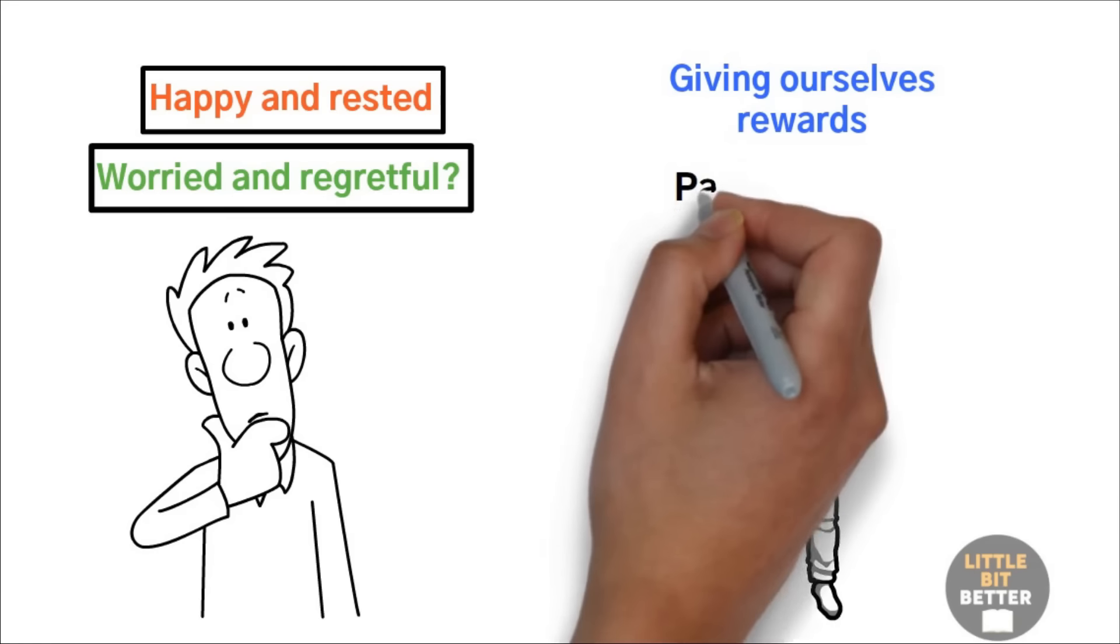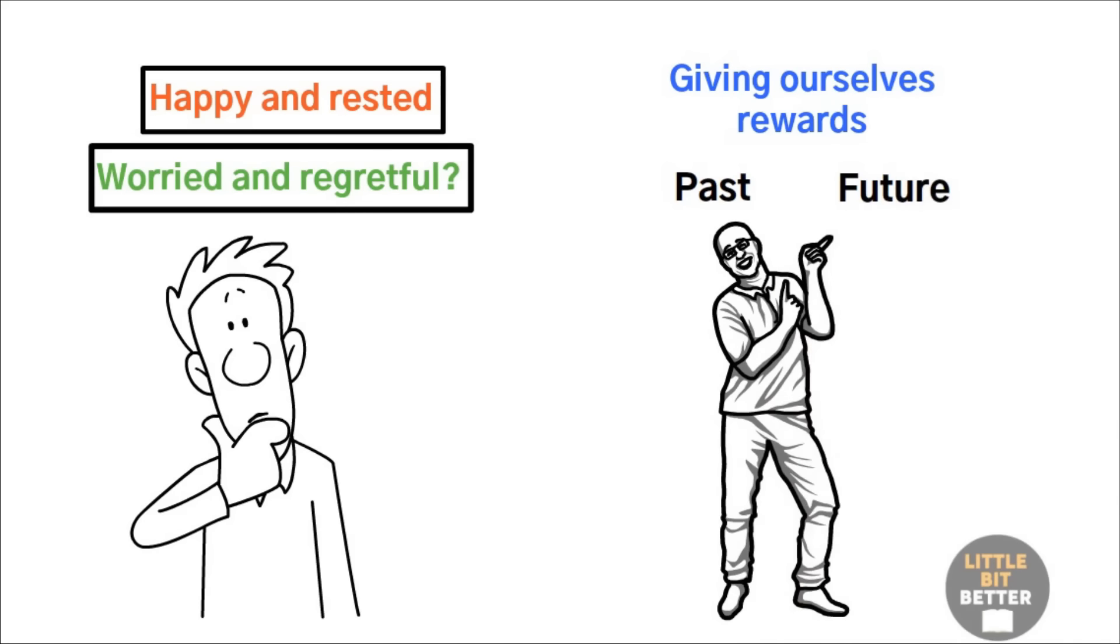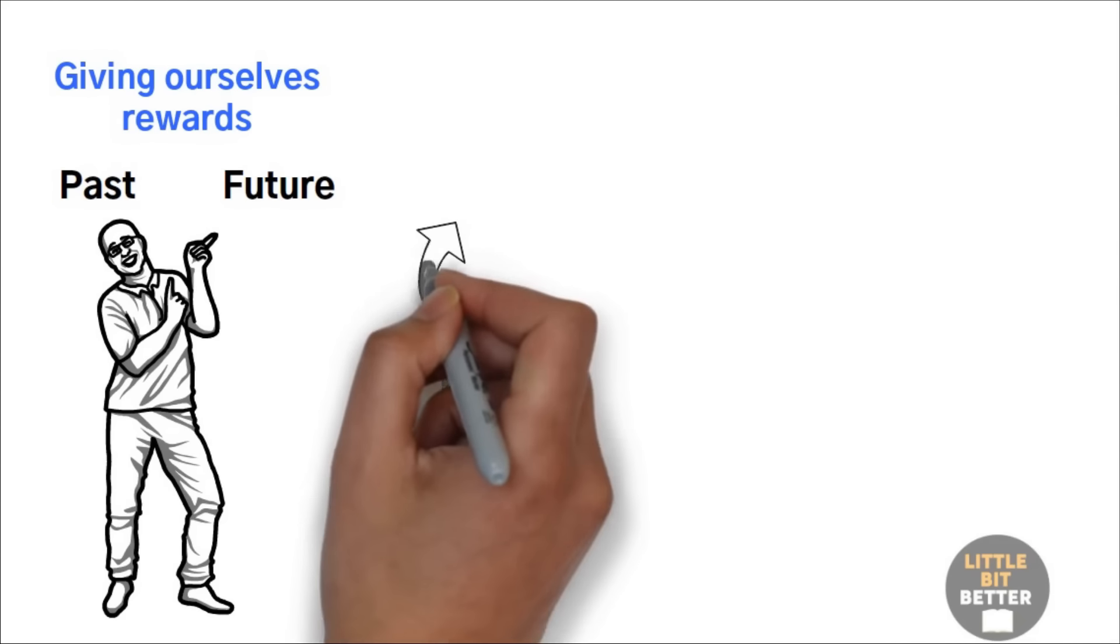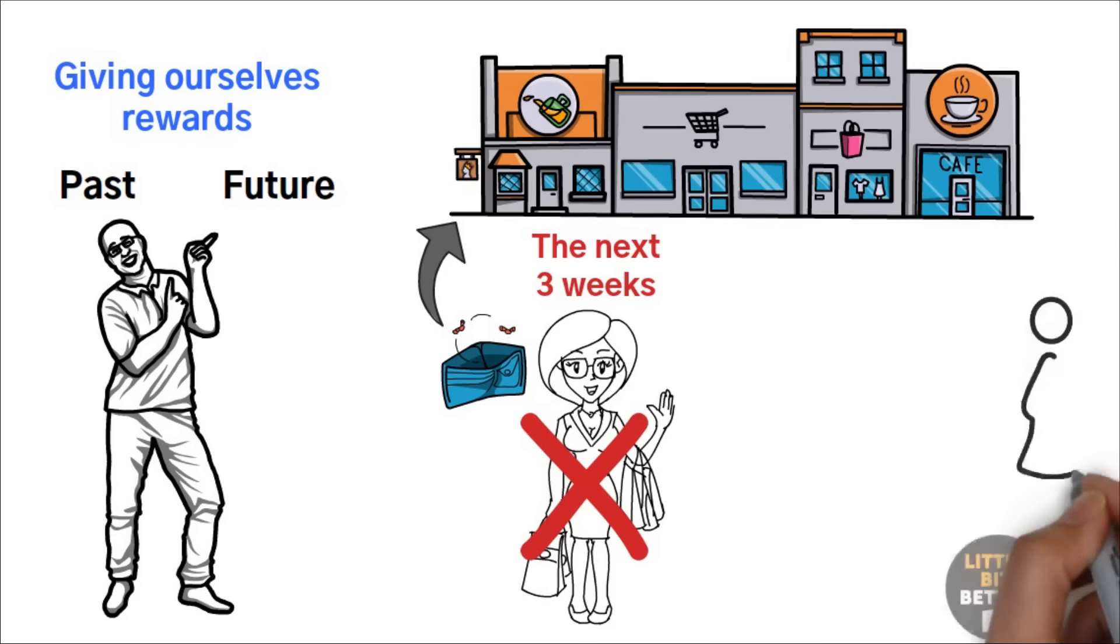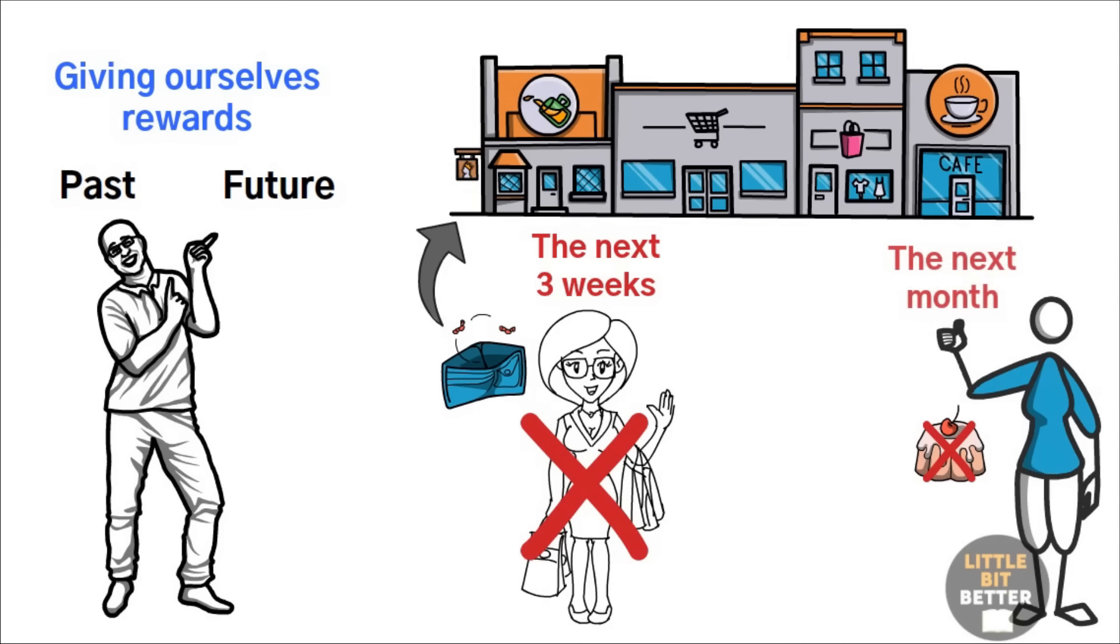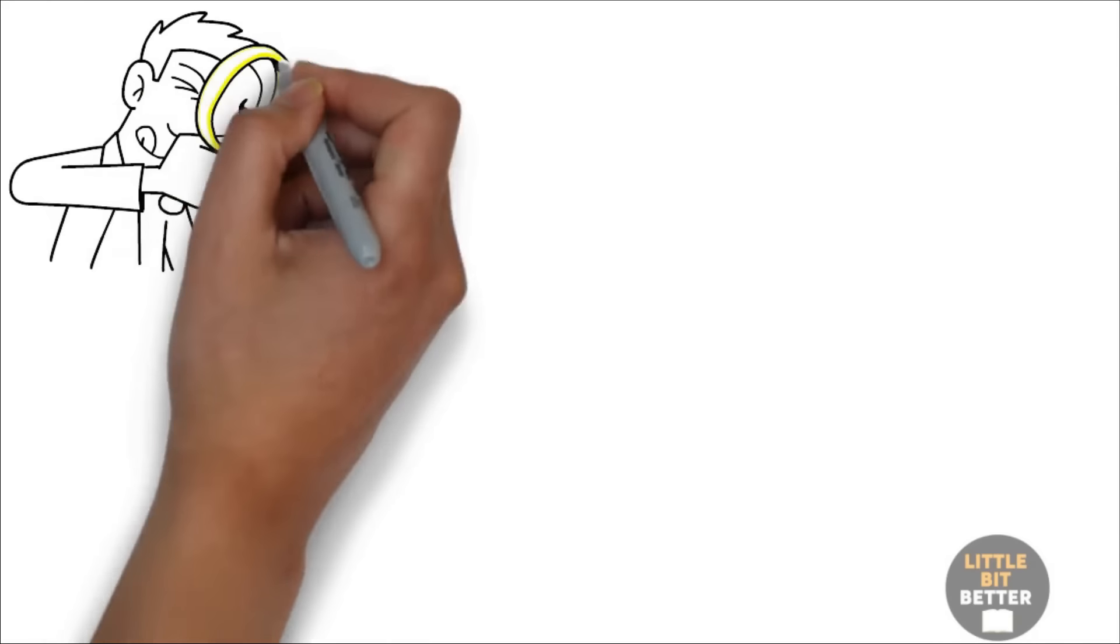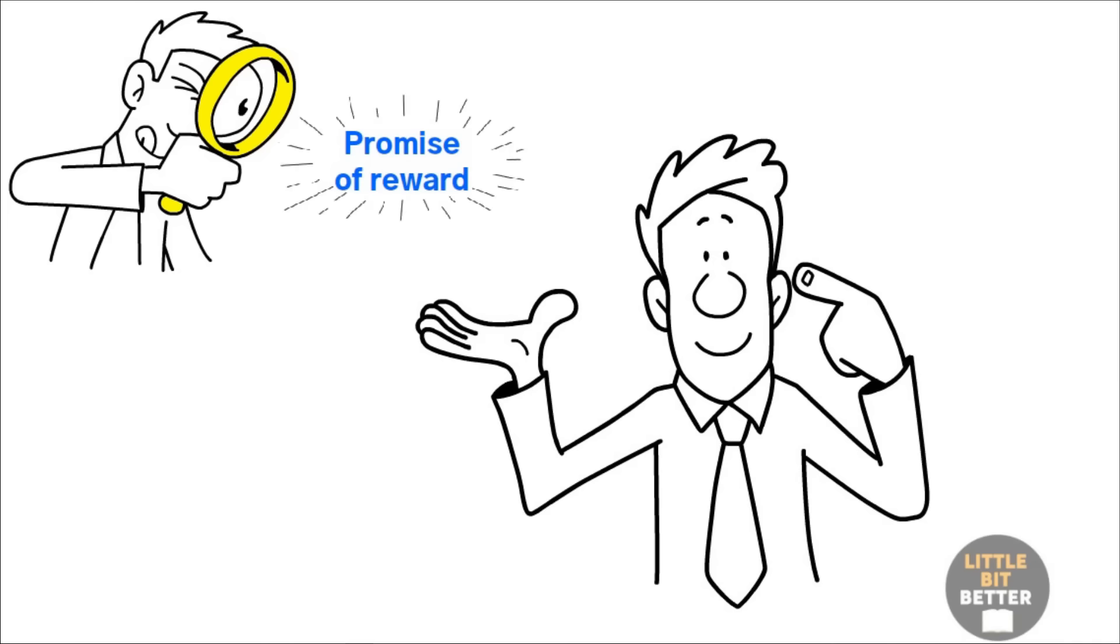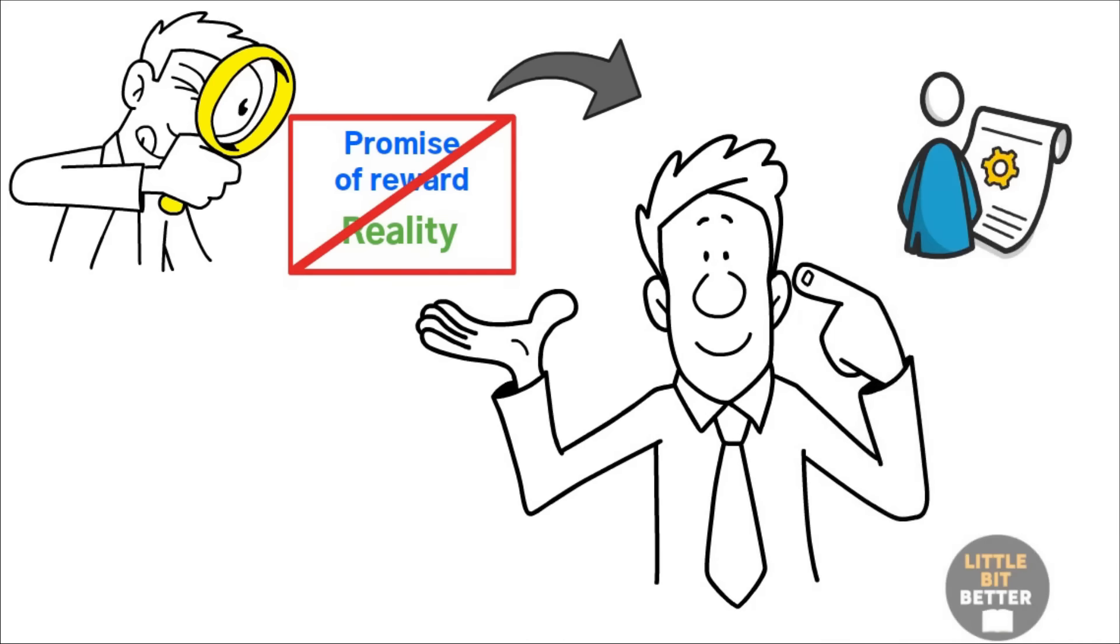In addition to giving ourselves reward for past behavior, we also give ourselves reward for future behavior, which is even more ridiculous. For example, I will spend money at the mall today, but I will not go shopping for the next three weeks. Or I will eat this dessert today, but no more dessert for the next month. These are just a few of the white lies we tell ourselves. Always test the promise of reward first. If you start explaining to yourself that the promise of reward and reality don't match, your brain will start adjusting to the truth.